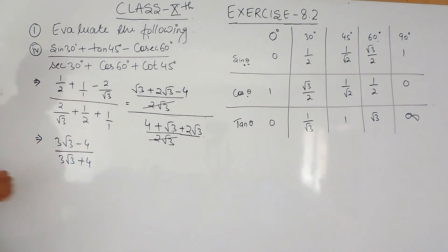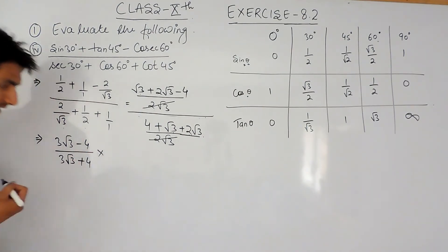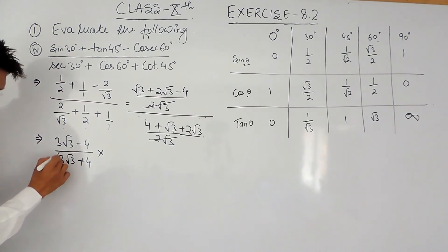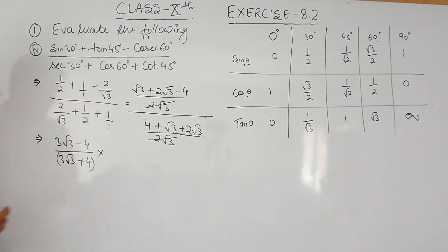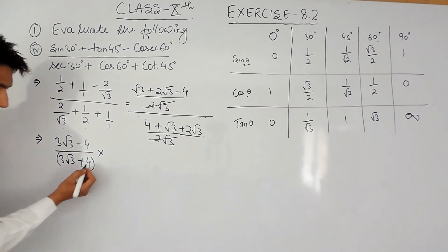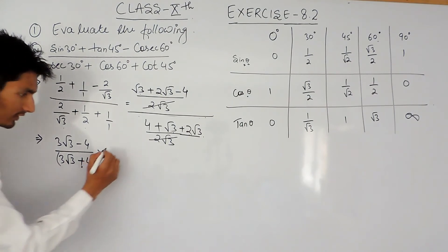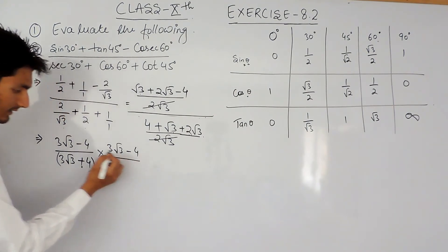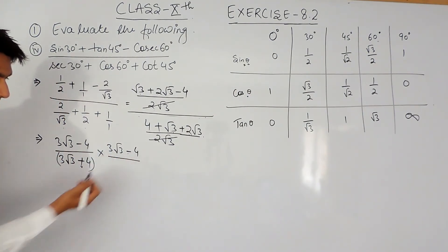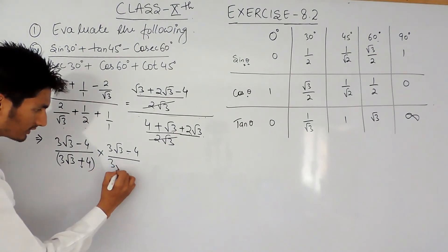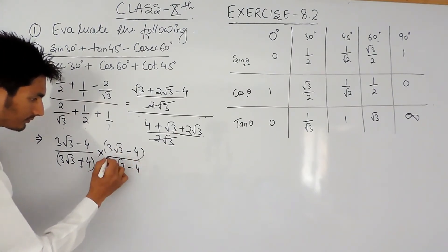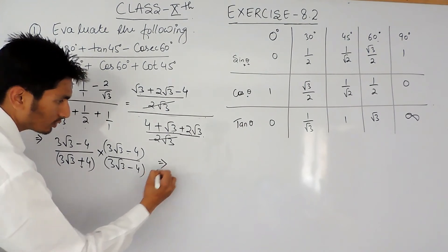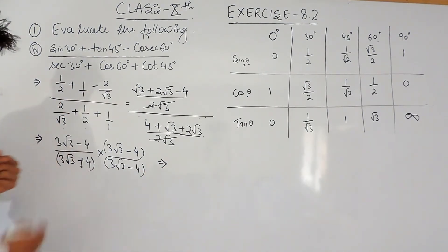To rationalize this, I have to multiply the expression by the same expression after changing the sign. This sign is positive, so I multiply by the expression with the sign changed to negative — giving root 3 minus 4 in the conjugate. This process is known as rationalization.